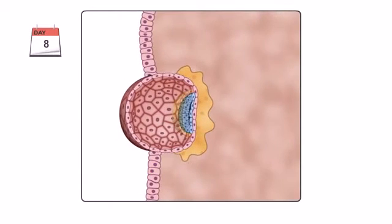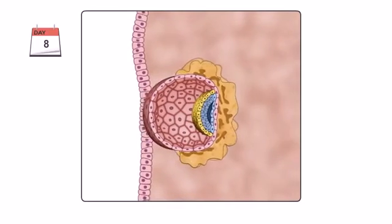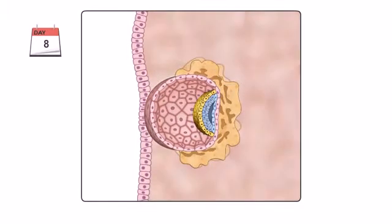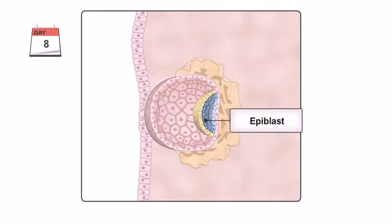The embryoblast differentiates into a bilaminar embryonic disc composed of two cell layers, the hypoblast and the epiblast.